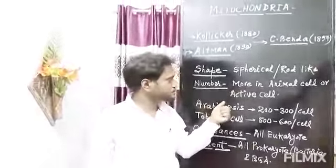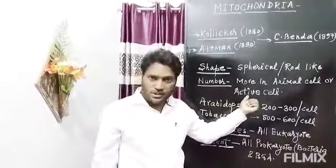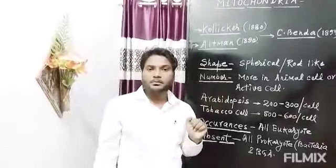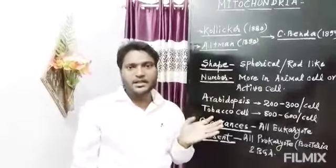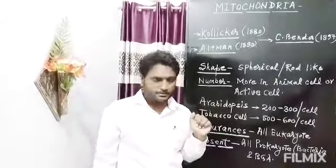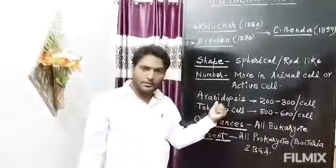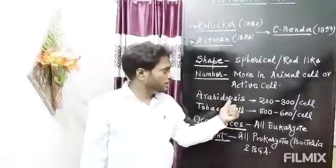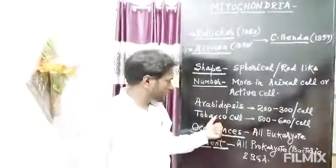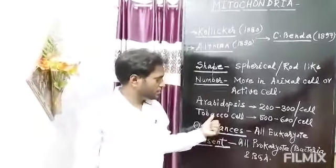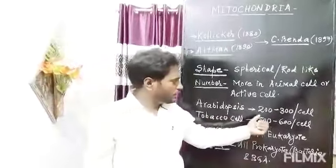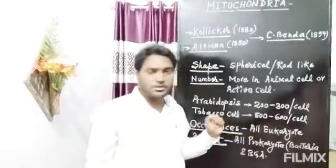Thus we confirm that more active the cell, the more number will be the mitochondria. Even in the case of plants, different plant cells have different numbers of mitochondria per cell. For example, the mesophyll cell of Arabidopsis contains 200 to 300 mitochondria per cell, while the mesophyll cell of Tobacco contains 500 to 600 mitochondria per cell.